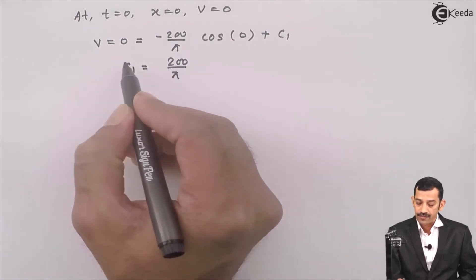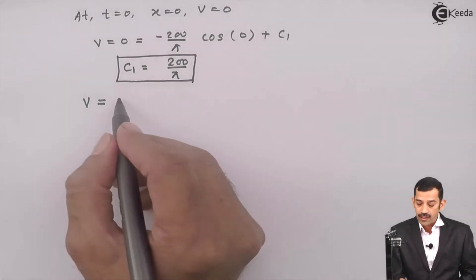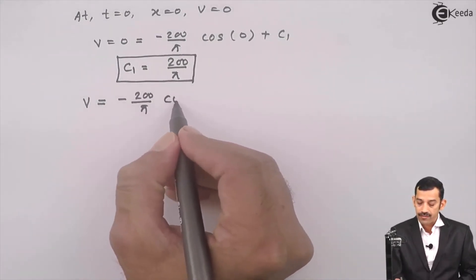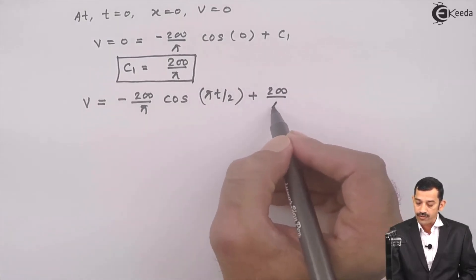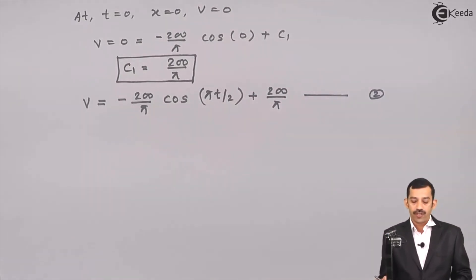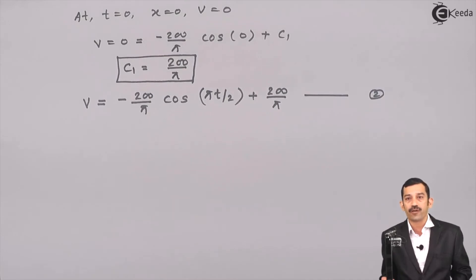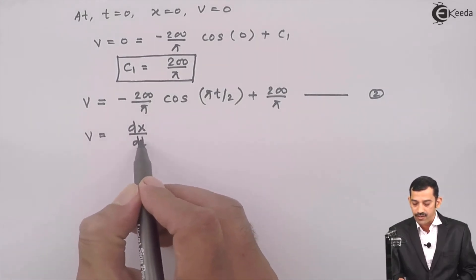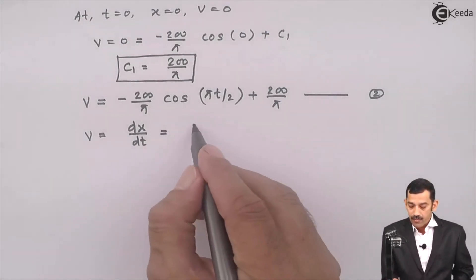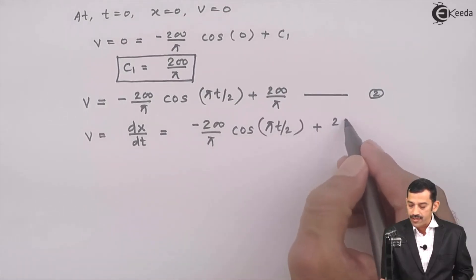Substituting C1 back, equation number 2 for velocity is: v = −(200/π) cos(πt/2) + 200/π. Now to find the position equation, since v is a function of time t, we substitute v = dx/dt. This gives dx/dt = −(200/π) cos(πt/2) + 200/π, and taking dt to the right side allows integration.